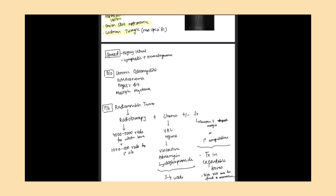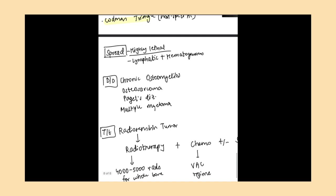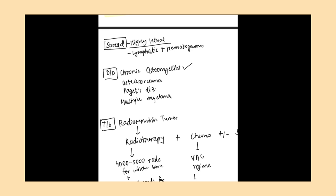Coming to spread, Ewing sarcoma spreads through lymphatic and hematogenous modes. It is highly lethal. Differential diagnosis includes chronic osteomyelitis, osteosarcoma, previous disease, and multiple myeloma.